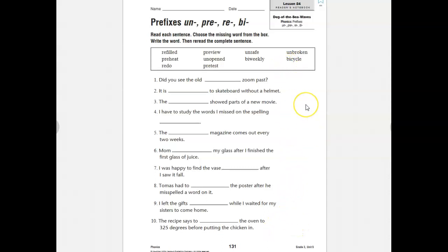So let's go through our reader's notebook page 131. If you happen to have your reader's notebook at home, you can follow along with us. If not, then just follow along with us here. Okay, number one, did you see the old blank zoom past? So thinking about all of these words, the only one that makes sense would be bicycle, right? Did you see the old bicycle zoom past?